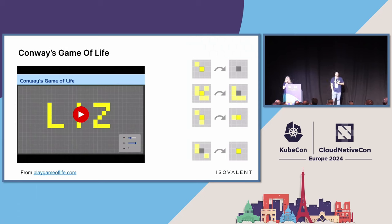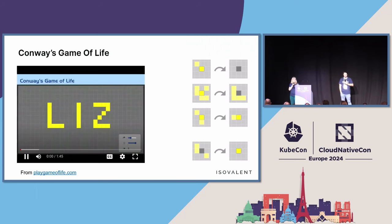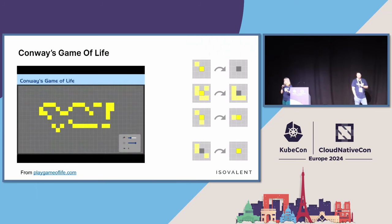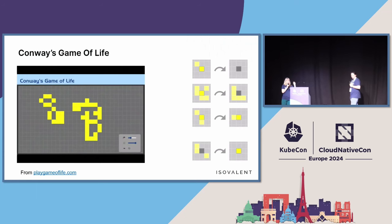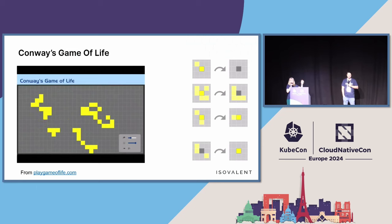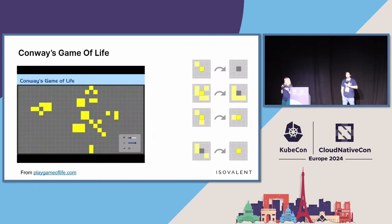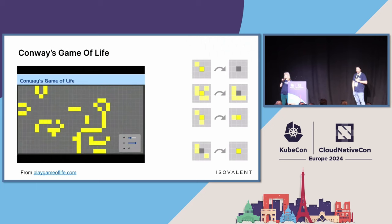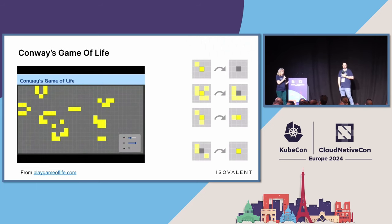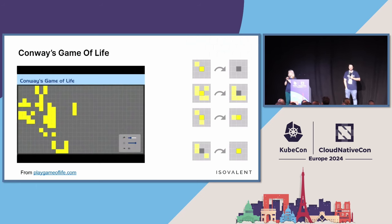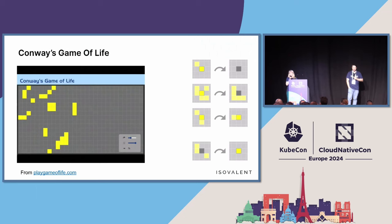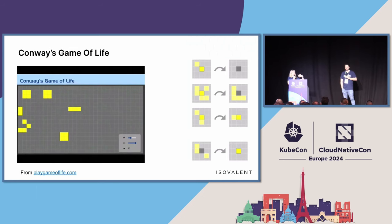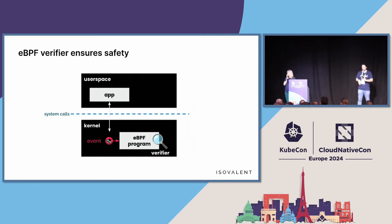Conway's Game of Life is an example of something that's Turing complete. Every step goes through generations, and each step the state of a cell is determined by the previous state of the cells around it. If a cell has no living cells around it, it dies of loneliness. If it has too many, it dies of overcrowding. But if an empty space has the right number of living neighbors, a cell will come to life. This is an example of something that can go on forever generating patterns — a very common example used as equivalent to Turing completeness. So, can we write it in eBPF?